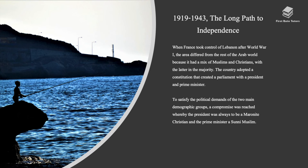First let's take a look at the long path to independence. Between 1919 and 1943, when France took control of Lebanon after the First World War, the area differed from the rest of the Arab world because it had a mix of Muslims and Christians, with the latter in the majority. The country adopted a constitution that created a parliament with a president and prime minister. To satisfy the political demands of the two main demographic groups, a compromise was reached whereby the president was always to be Maronite Christian and the prime minister a Sunni Muslim.